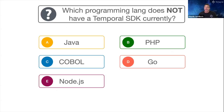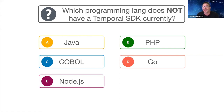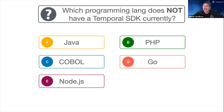Let's get started. Question number one: which programming language does not have a Temporal SDK currently? A is Java, B is PHP, C is COBOL, D is Go, or E is Node.js. I'll give about 20-30 seconds for you to type in your answers in the chat.